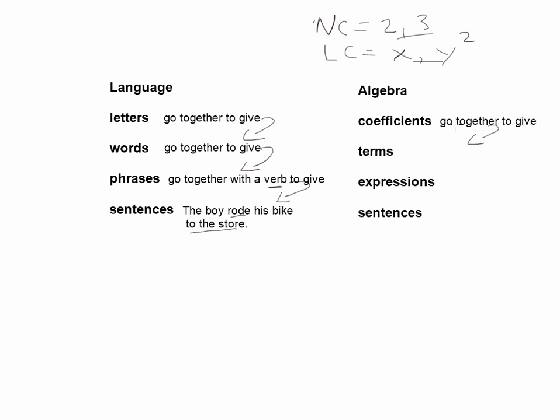So these go together to give you terms. Now let's see, terms go together to give you expressions. Now what's a term? A term is an algebraic term - a combination of a numerical coefficient and a literal coefficient separated by a multiplication sign. So you could have a term that looks something like this: 2x², you could have a term that looks simply like this: 3x.